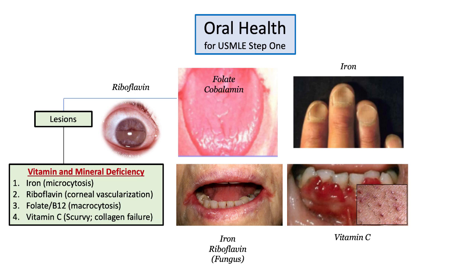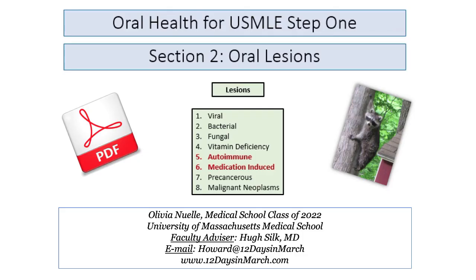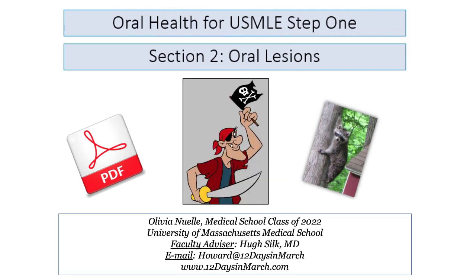Think about the classic description of scurvy among sailors, illustrated here by this toothless pirate. So these are the vitamin and mineral deficiencies most closely associated with oral pathology on Step 1. Angular colitis, glossitis, and gingival hyperplasia are the terms that will cue you in. And with that, let's take another quick break before picking up our discussion of autoimmune disorders and disorders of the oral cavity associated with medication use. If you have any questions or concerns about any of this material, please email me at 12 Days. Thank you.